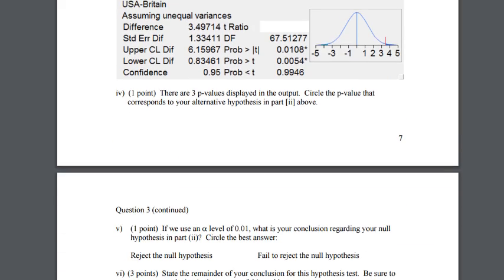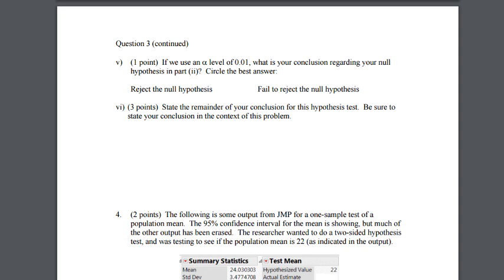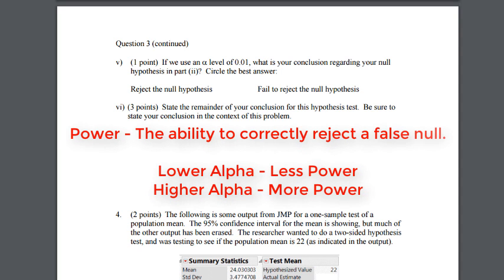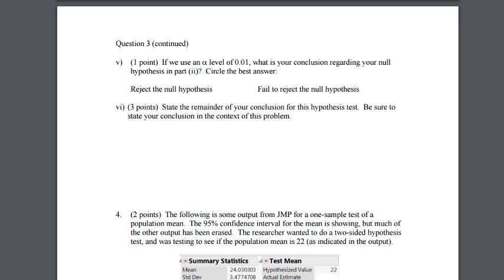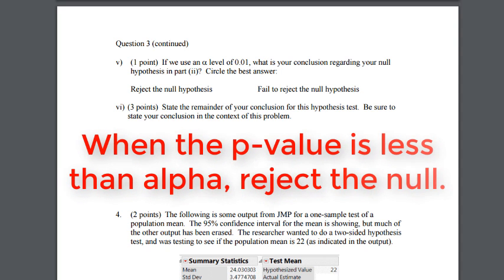For this part we use alpha = 0.01. Remember, when we lower alpha the test becomes less powerful — power is the ability to correctly reject a false null, so it gets harder to reject when alpha is lower. When the p-value is less than alpha we reject the null; if no alpha is stated, assume 0.05.